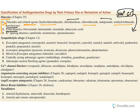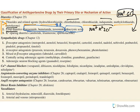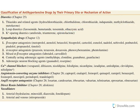Loop diuretics include furosemide, bumetanide, torsemide, and ethacrynic acid. Drugs ending in '-amide' are sulfonamide derivatives; ethacrynic acid is the only exception without a sulfonamide group. Loop diuretics block the sodium-potassium-chloride symporter at the ascending loop of Henle, causing severe diuresis. These are very powerful agents used to treat pulmonary edema. Potassium-sparing diuretics cannot be used as monotherapy but are combined to spare potassium. Amiloride and triamterene are sodium channel blockers at the collecting duct; spironolactone and eplerenone are aldosterone antagonists.